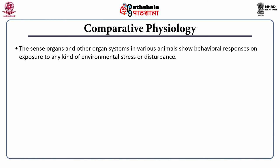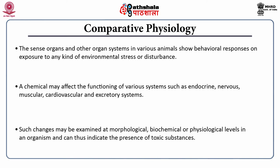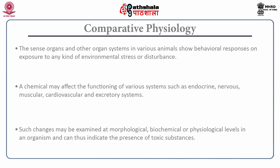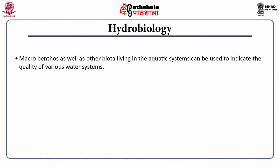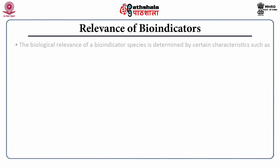Comparative physiology: The sense organs and other organ systems in various animals show behavioral responses on exposure to any kind of environmental stress or disturbance. A chemical may affect the functioning of various systems such as endocrine, nervous, muscular, cardiovascular, and excretory systems. Such changes may be examined at morphological, biochemical, or physiological levels in an organism and thus can indicate the presence of toxic substances in the environment. Hydrobiology: Macrobenthos as well as biota living in aquatic systems can be useful in the indication of quality of various water bodies. Biotic index in any water body is one such parameter for the purpose of biomonitoring.